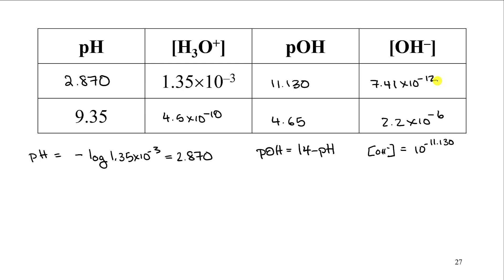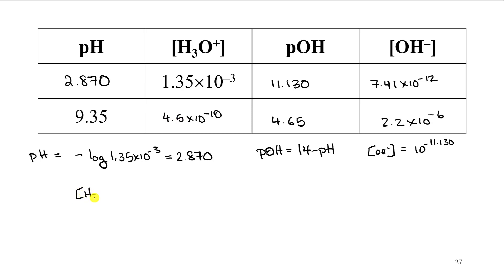For the second row, with pH 9.35: pOH equals 14 minus 9.35. The hydronium concentration is 10 to the minus 9.35, giving 4.5×10⁻¹⁰. Use the same set of equations to fill in all values in the grid.